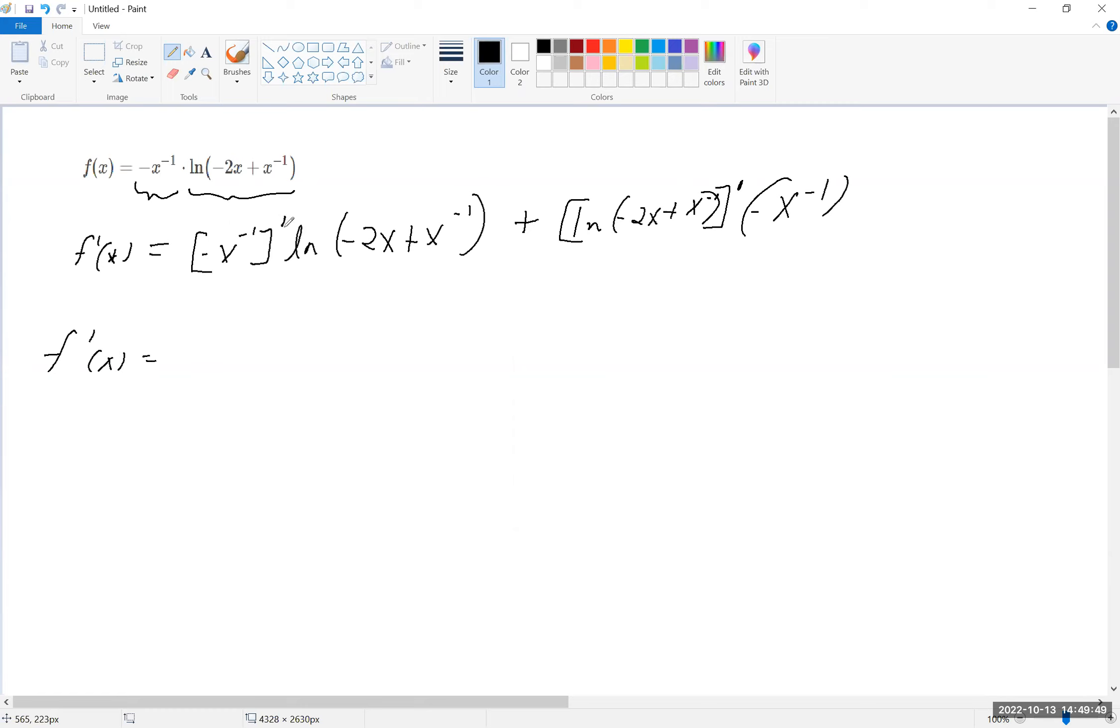So then what we have to do is, again, taking the derivative of this using the power rule, then this becomes, you bring the one down, the negative one down, so it becomes x to the minus 2. And just for simplicity, let's get rid of that one. And we just leave the natural log of minus 2x plus x to the minus 1.